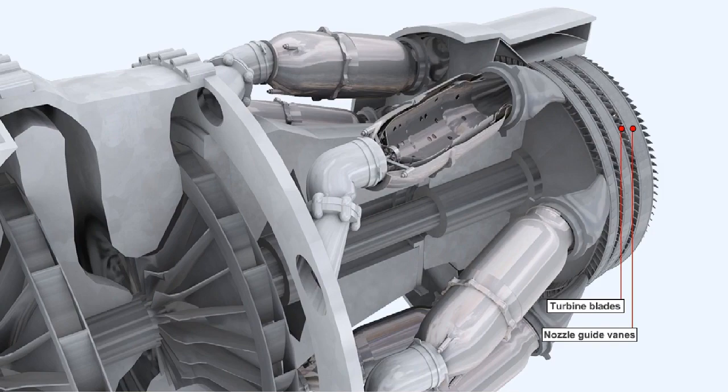The Germans' inability to produce materials which could withstand the heat of the gas stream was the main problem with the early German gas turbine engines. Because of the poor materials used in the turbine assemblies, the engines would only run for between 10 to 20 hours before the turbine blades suffered meltdown.